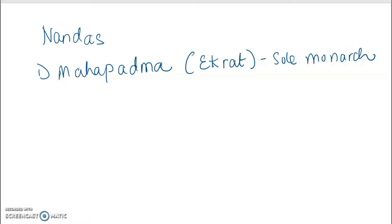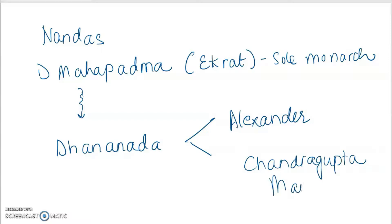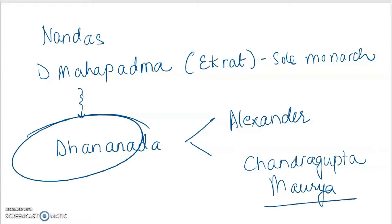So after Mahapadmananda, there were a lot of kings. But we are going to straight away move on to one of the most important ones, Dhanananda. At his time, Alexander attacked — I'll talk about it in the later session. Alexander invaded India and he has been referred to by different names in Greek texts. During Dhanananda's time, it was when Chandragupta Maurya — after this, the Maurya time period starts — it is Chandragupta Maurya who overthrew Dhanananda and set up the Mauryan empire. So after Magadha, you have the Mauryan dynasty.